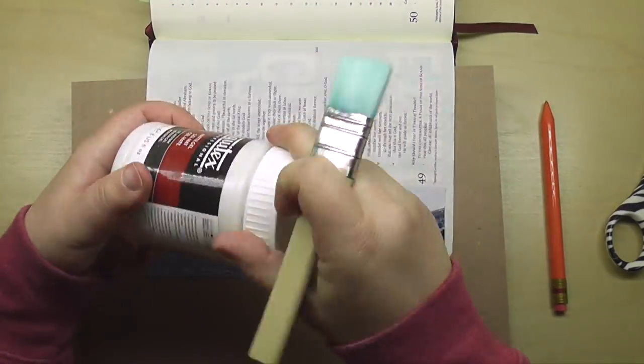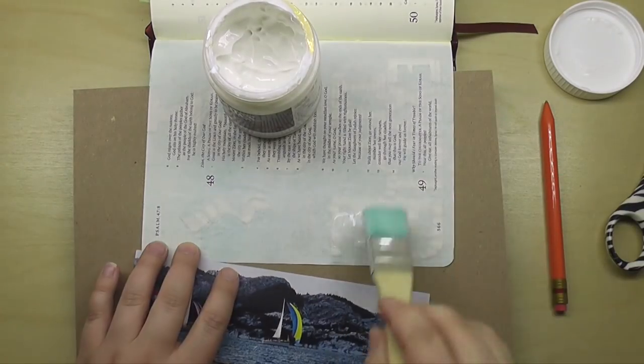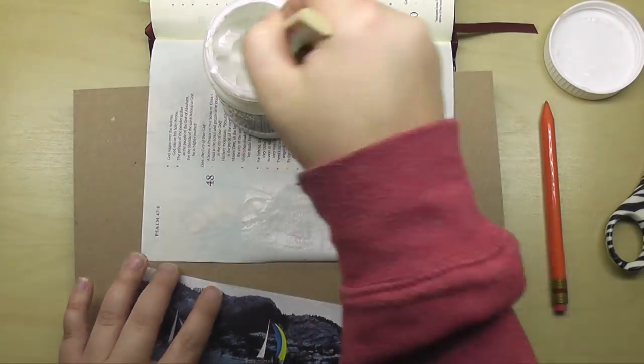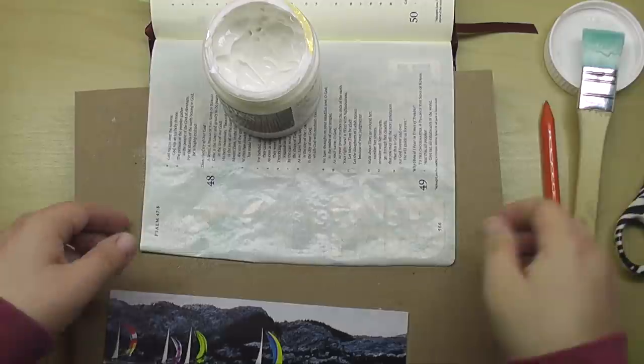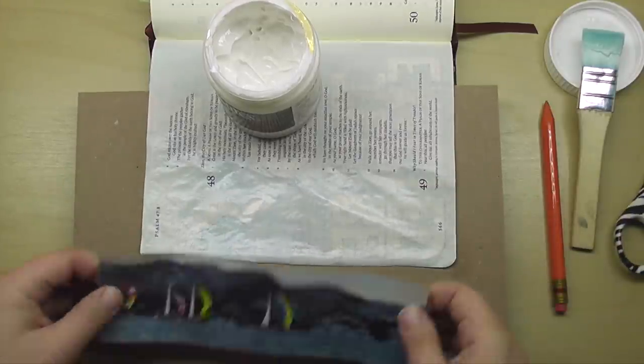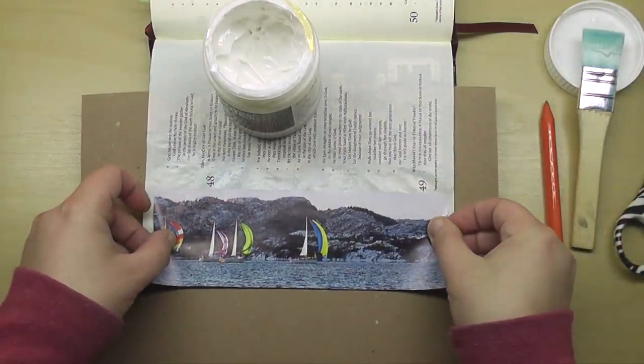And so I simply cut it out, and I'm just adding some matte gel medium, this is Liquitex matte gel medium, to the page, and it's going to act like an adhesive, and I'm just going to go ahead and press this down into place.